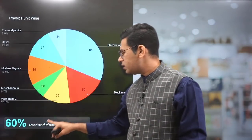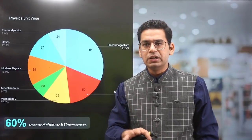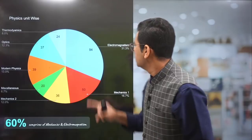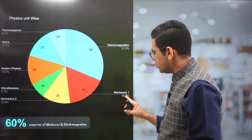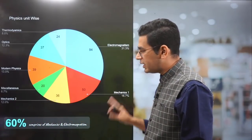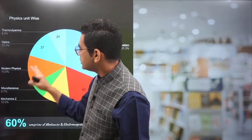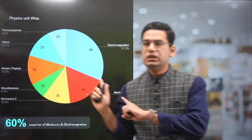In physics, 60% of the paper comprises mechanics and electromagnetism — very similar to JEE Mains. Electromagnetism comprises 31% of the paper. Mechanics Part 1 is 16% and Mechanics Part 2 also contributes — combined about 28% of the paper is mechanics. Modern physics has 13% weightage within just three chapters, which is a very scoring opportunity. Optics is 12% and thermodynamics is 8% — very similar to JEE Mains.